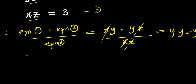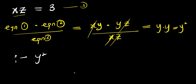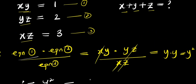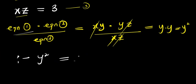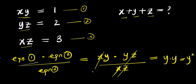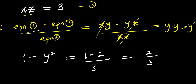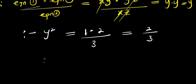So from here, therefore, y squared equals — what is equation 1 in terms of values? That is 1. Times equation 2, that is 2, divided by equation 3, that is 3. So this gives us 1 times 2, that is 2 over 3. So we can have y squared equals 2 over 3. Take note of this.